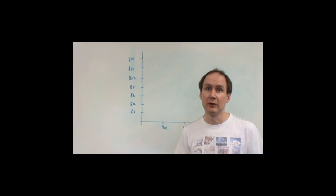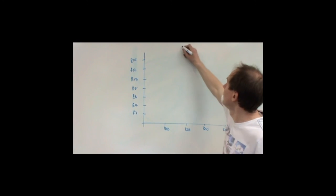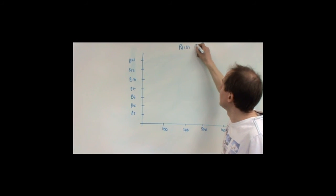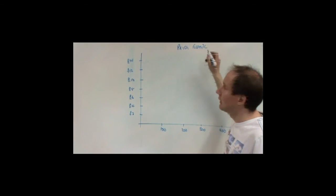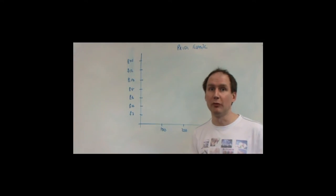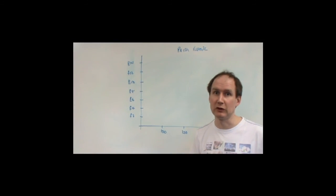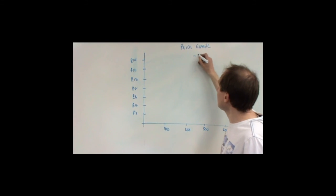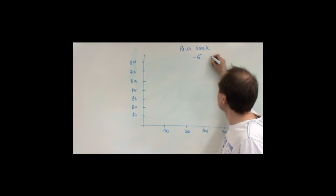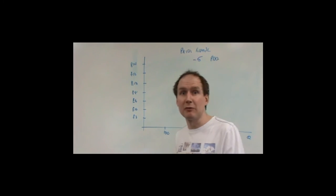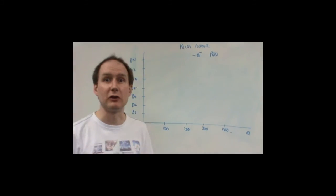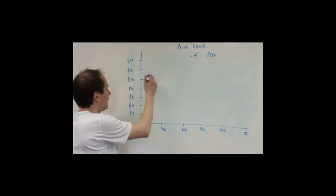We can show this diagrammatically. Let's suppose that we've got price elastic demand. In other words, demand changes more than proportionally following a change in price. So let's suppose the price elasticity of demand is minus 5.